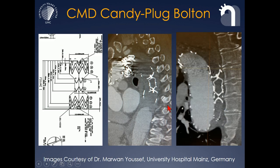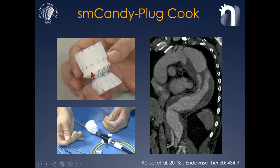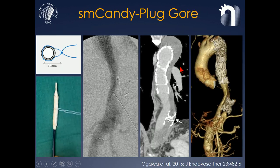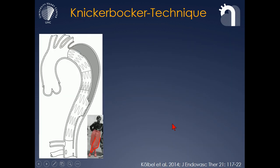It was very interesting for us to see that other companies and physicians have also taken up that technique using other devices like this candy plug produced by Bolton Medical. Our initial design just made a suture around a standard Aorfix stent graft, and inventive people have come up with other ways of achieving this — with a Medtronic Talent extension graft with an end ligation, or with a Gore extension that has been tied off, allowing to plug the false lumen as you see here.